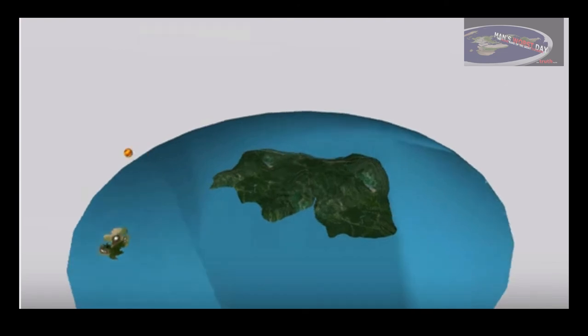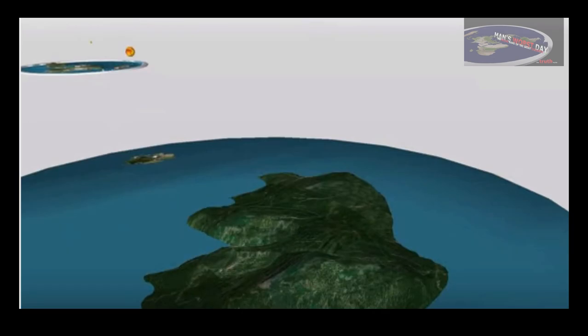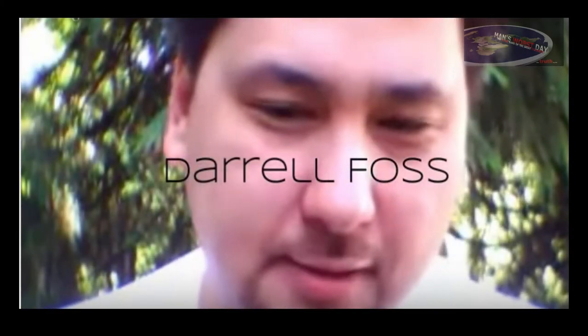These continents, once you cross the ice, you're going to run into more water and then you're going to run into more land. This is what they're hiding.